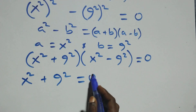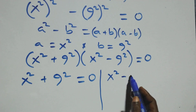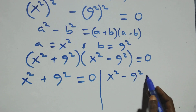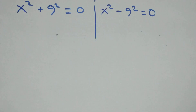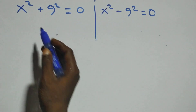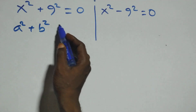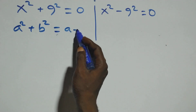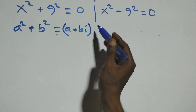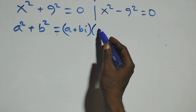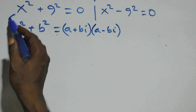From here we have two possible cases: the first is x² + 9² = 0, or the second is x² − 9² = 0. Solving the first case, this follows the sum of squares identity: a² + b² = (a + bi)(a − bi).